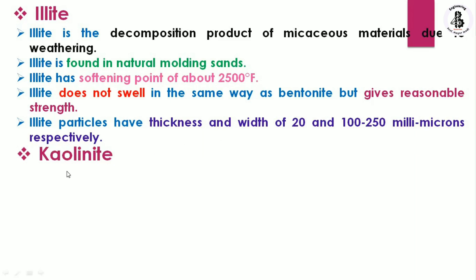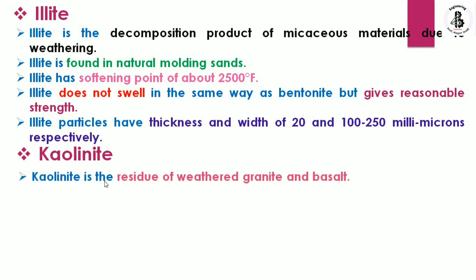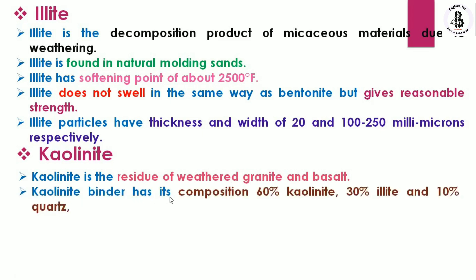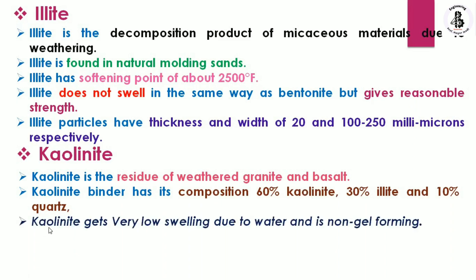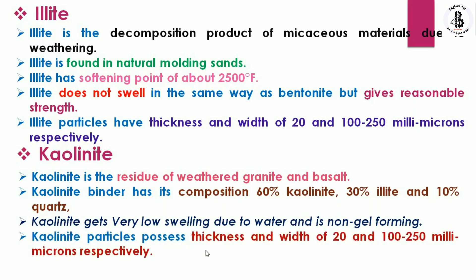Kaolinite is the residue of weathered granite and basalt. Kaolinite binders have a composition of around 60% kaolinite, 30% alite, and 10% quartz. Kaolinite shows very slow swelling due to water and is non-gel forming. Kaolinite particles have a thickness and width of 20 and 100–250 millimicrons respectively, similar to alite.